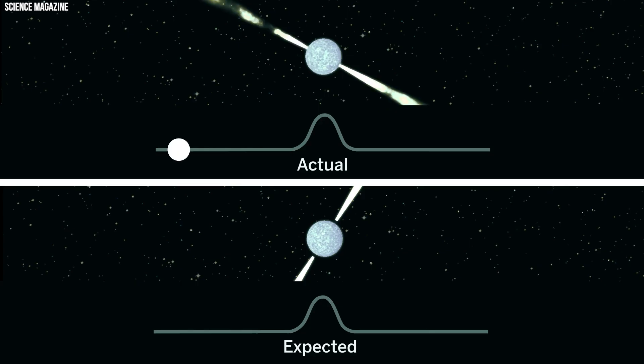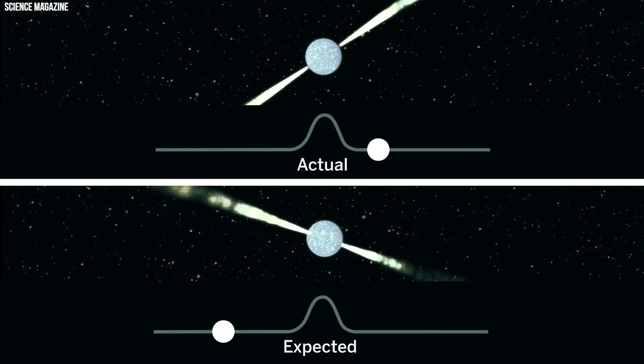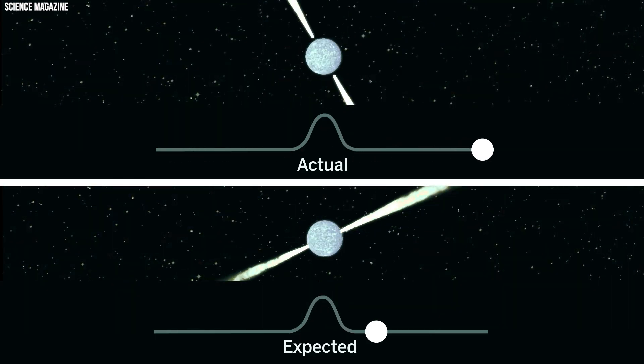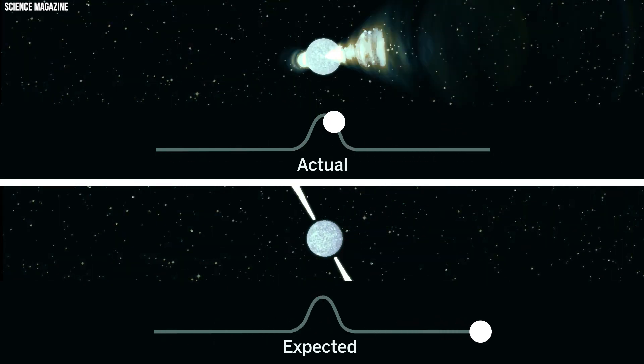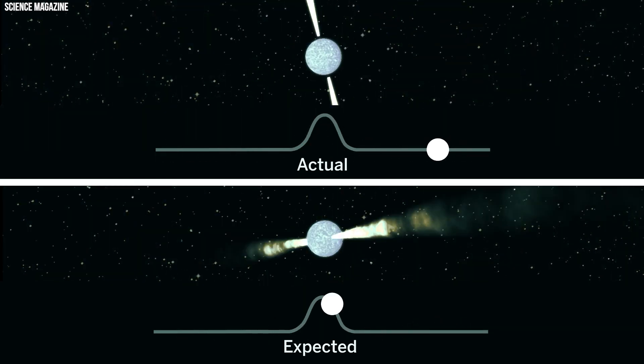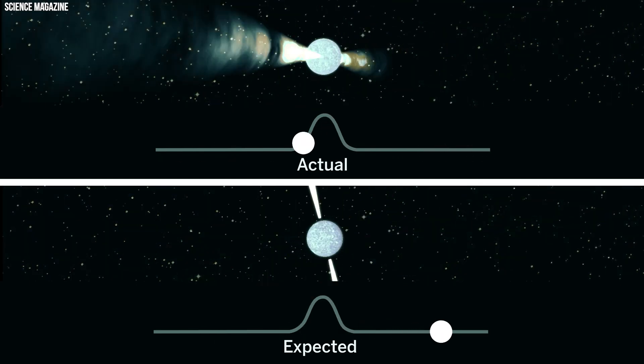Consequently, neutron stars boast some of the most potent magnetic fields in the known universe. These magnetic fields work to direct particles to the poles of pulsars, where they're expelled as jets at speeds approaching that of light from each pole.